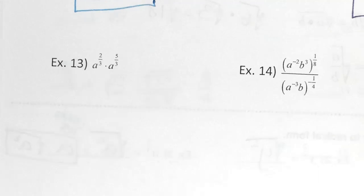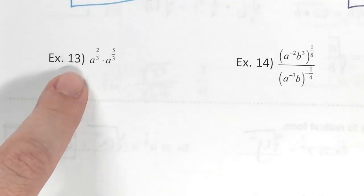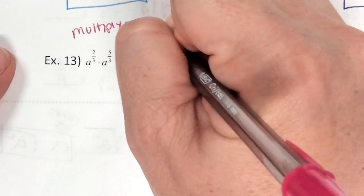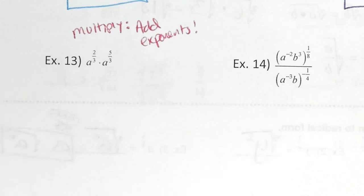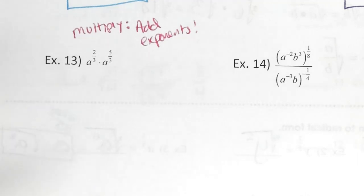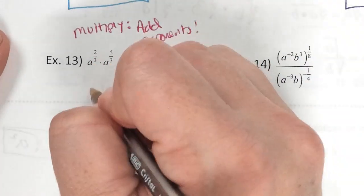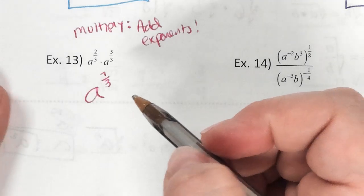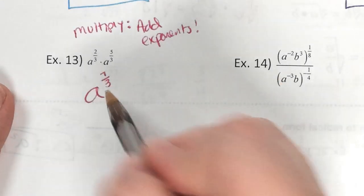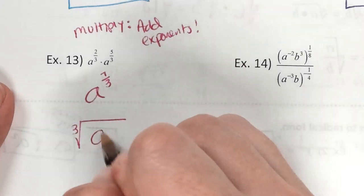Look at example 13. What's happening between the a's? Multiplication. When we multiply, we add exponents. When adding fractions, what do they have to have? The same denominator. Do these already have the same denominator? Yes. So I can do it by hand or type in the calculator. What if they didn't have a common denominator? Your calculator doesn't care — you can just type the fractions in your calculator and add them. What is 2 thirds plus 5 thirds? 7 thirds.